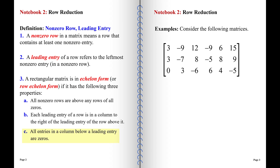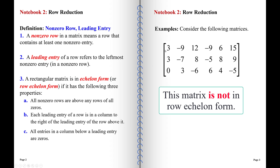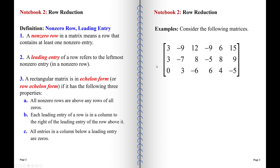The third criterion is that all entries in a column below a leading entry are zeros. By this definition, the first matrix shown is not in echelon form, because the leading entry in the second row is also in the first column — it must be in a column to the right of the leading entry in the first row. Part C doesn't hold either because entries below the leading entry in the first row are not all zero.